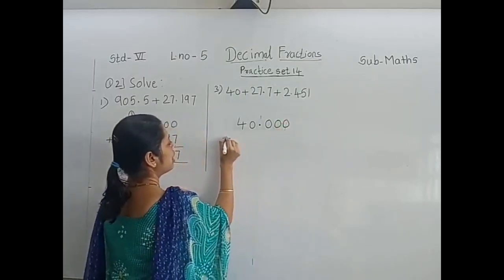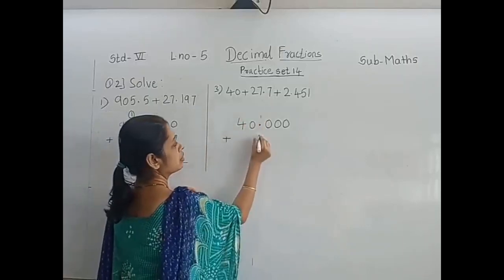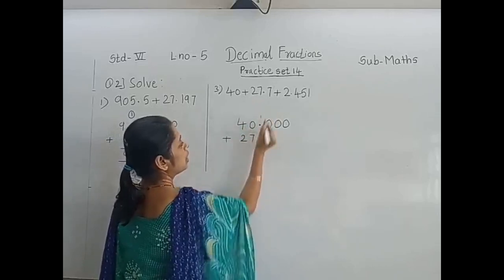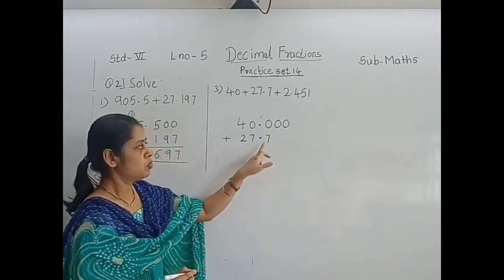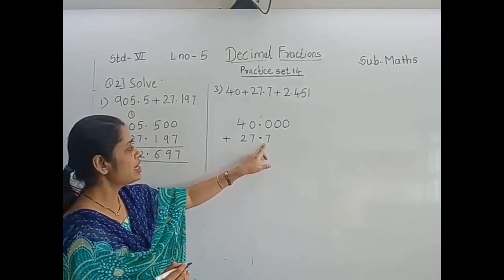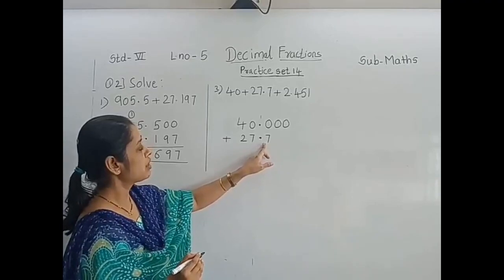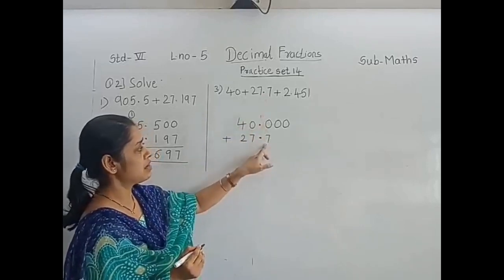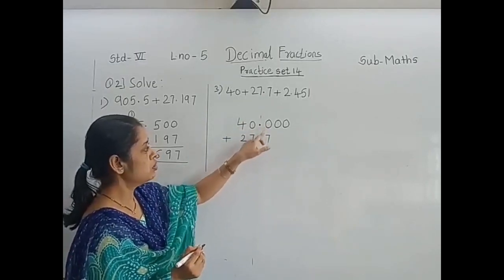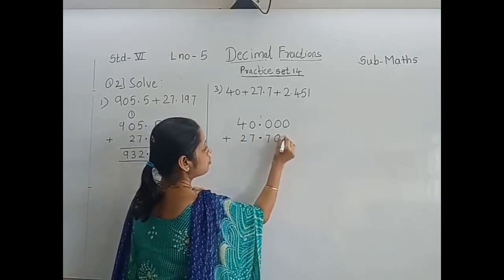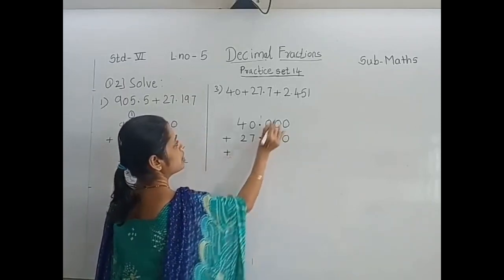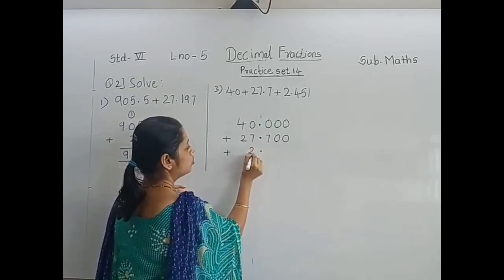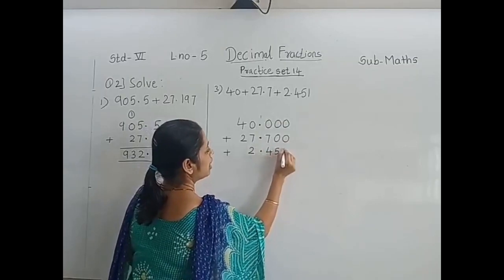Now write the second number: 27.7. Line up the decimal point. The digit on the right side of the decimal point is 7, so write this 7 below the corresponding place. Here they have not given any further digit, so put 0. The third number is 2.451. Put the decimal point, then 2. The right side digits are 4, 5, 1.